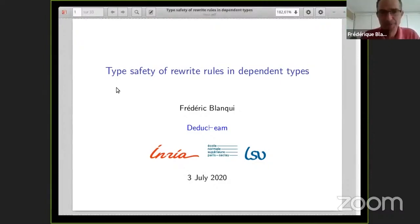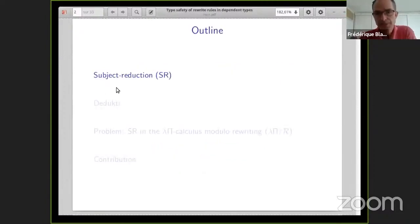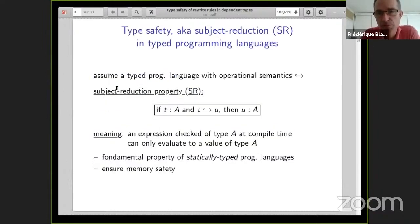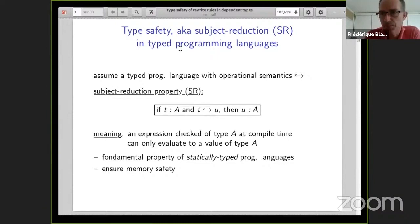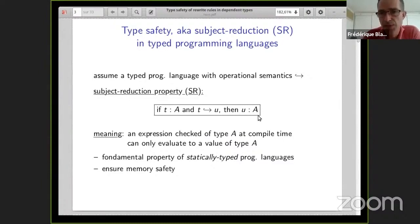Thank you very much and hello everyone. By type safety, I mean what is also known as subject reduction. Let me explain what subject reduction means in two different contexts. First, in typed programming languages, it means that if you have a language with some operational semantics, and you have a typed program T of type A, and T evaluates to some value U, then the value you get at the end has the same type.